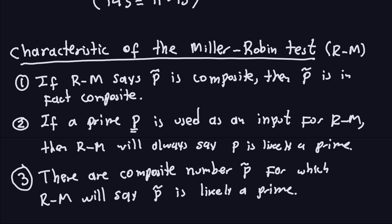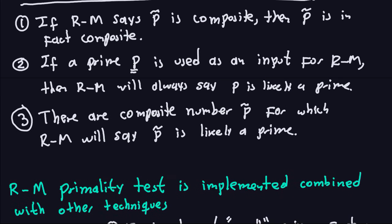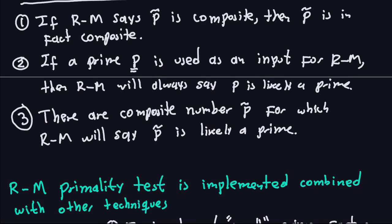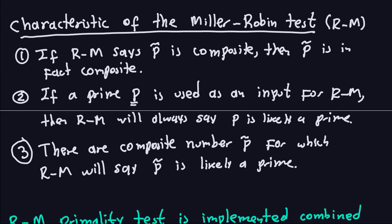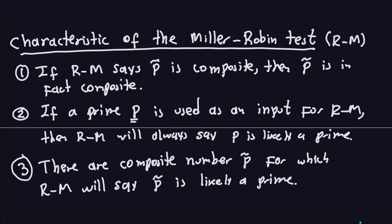That's the Miller-Rabin test. In the next video, I'm going to explain a little bit about the implementation of this algorithm in Java, and how you would go about writing your own software to test whether something is prime or not using the Miller-Rabin algorithm.